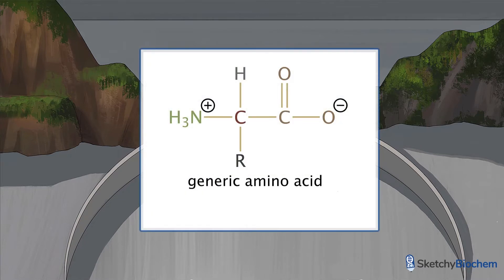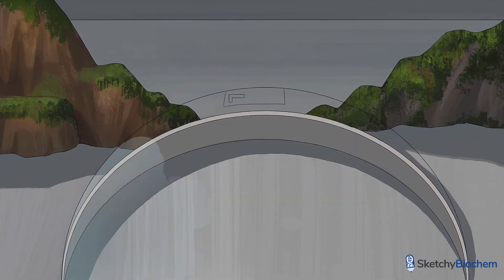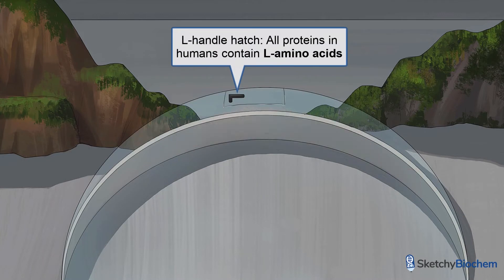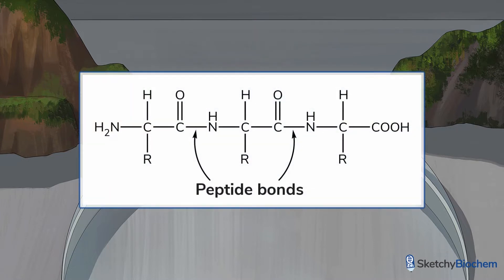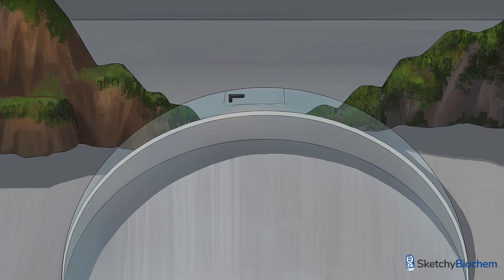Amino acids contain a carboxylic acid group, an amino group, and a unique side chain, all of which bind to the central alpha carbon. All amino acids in humans exist in the L-stereoisomer form, as opposed to the D-form. Recall from organic chemistry that stereoisomers have the same molecular formula and connectivity between atoms, but are oriented differently in three-dimensional space. Peptide bonds join amino acids together to form polypeptides. Now that we have all that basic info out of the way, let's briefly cover the major classes of amino acids. Note that the one-letter codes will be present on the signage, and the side chain structure of each amino acid will be depicted in the animals or objects inside the zoo.